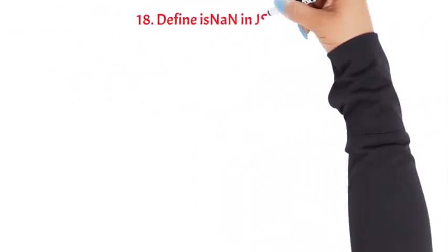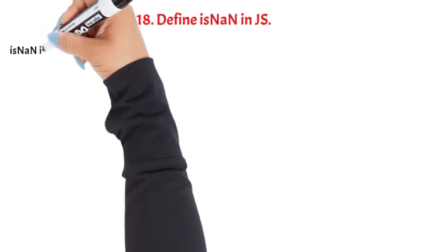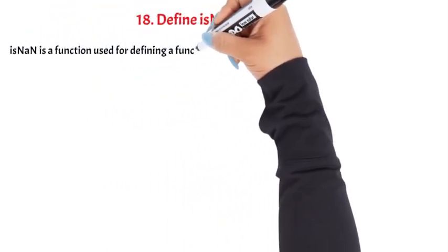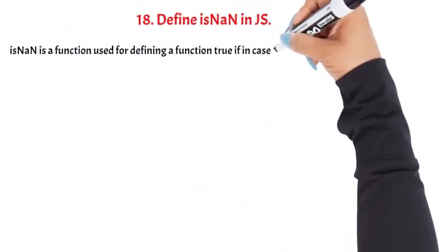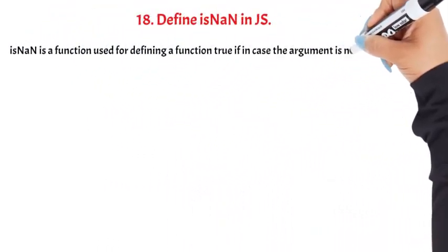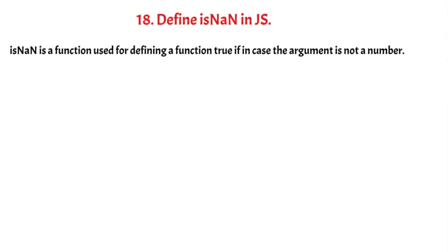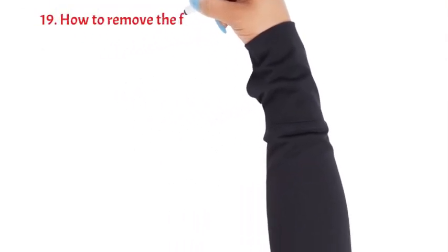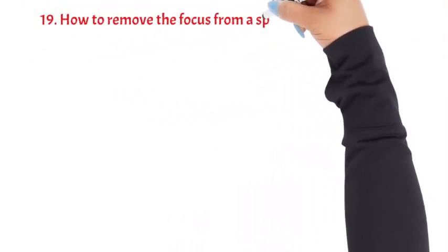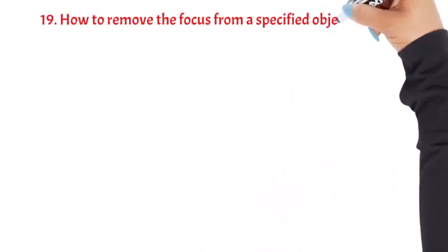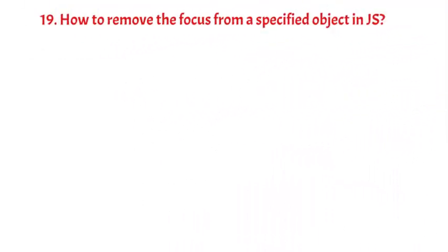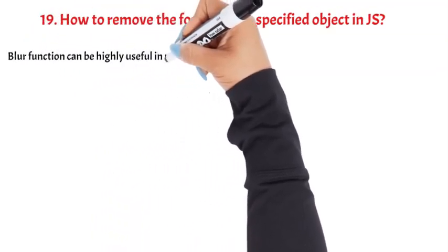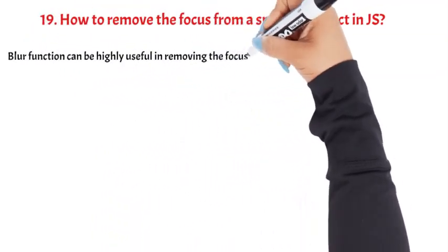Question 18: Define isNaN in JS. isNaN is a function that returns true if the argument is not a number. Question 19: How to remove focus from a specified object in JS? The blur() function can be highly useful in removing focus.